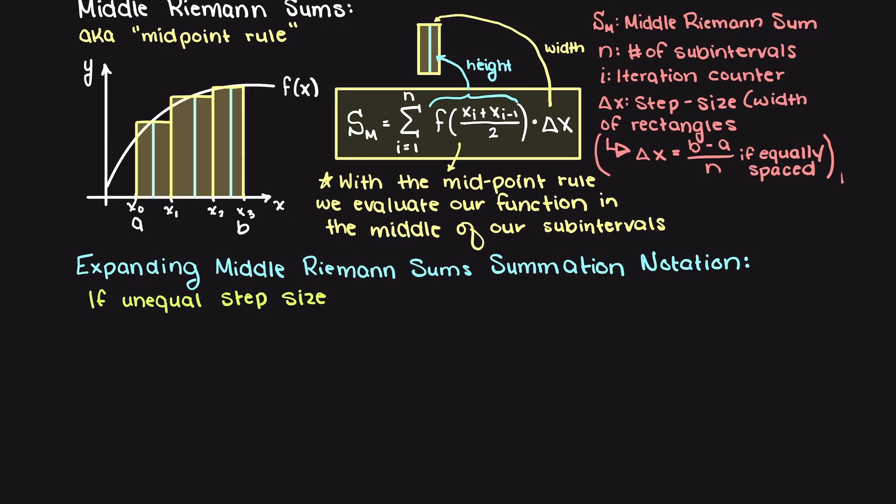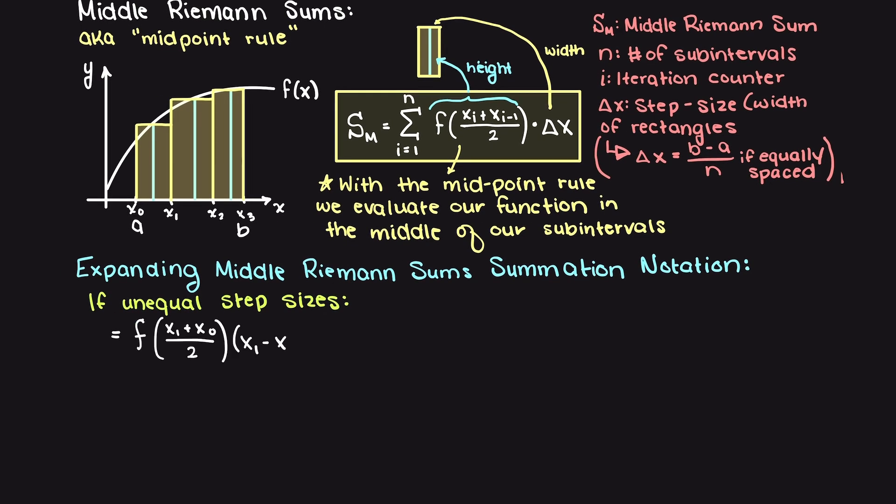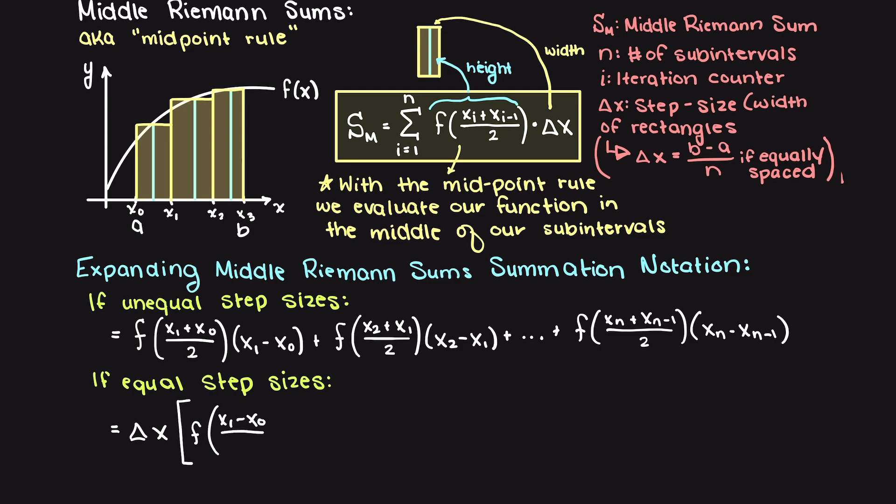Now let's write out the equation for middle Riemann sums if we have unequal step sizes just like we did for the other ones. If all of our rectangles here are taken to be the same width, we can again factor out this delta x term and move it to the outside of our summation term.